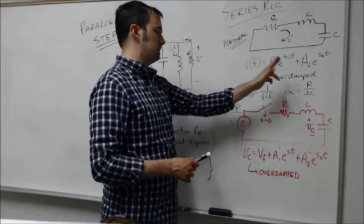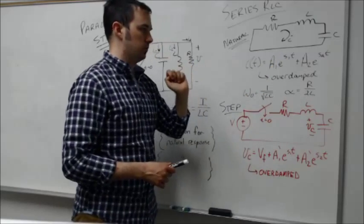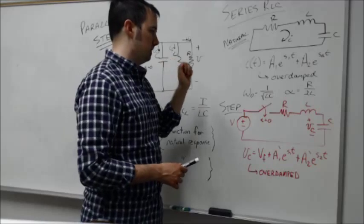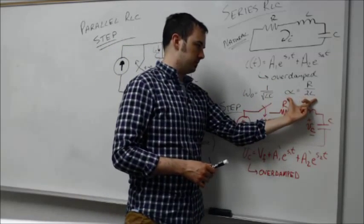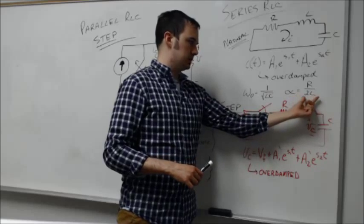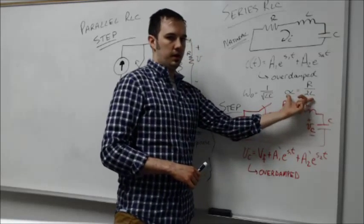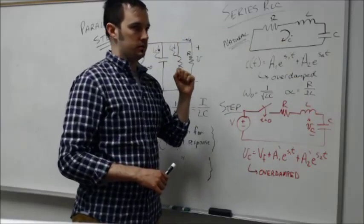The only difference though is that these roots s1 and s2 are slightly different in the series case. Specifically, this alpha term, which is that network frequency, is now r over 2L. This is different now, specific to the RLC in series case, whereas in parallel it was a different quantity.